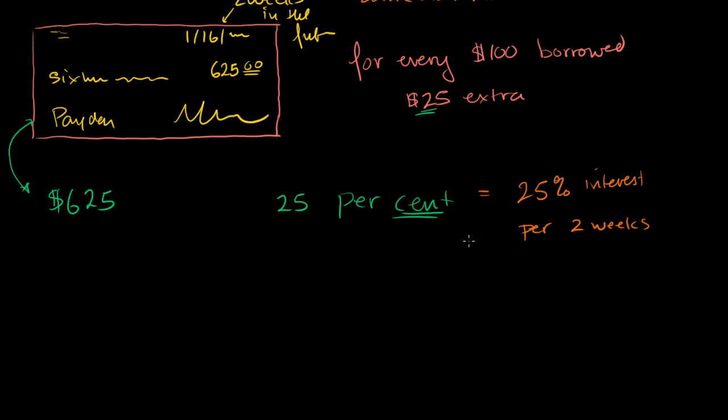Or we could write it in the traditional way. This is 25% interest per two weeks. So if we were to just calculate a simple APR, a simple annual percentage interest rate, and you might want to watch the video on that to understand that that just takes your 25% and then multiplies by the number of periods in the year. So we have 52 weeks per year, but this is every two weeks.